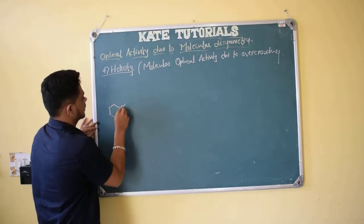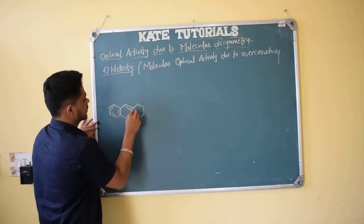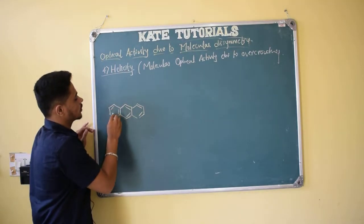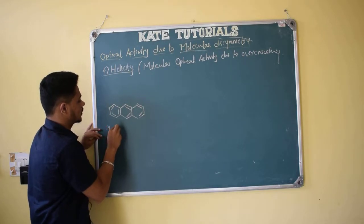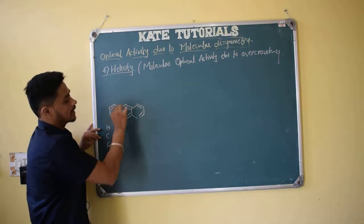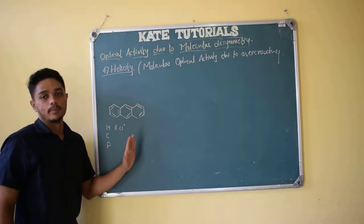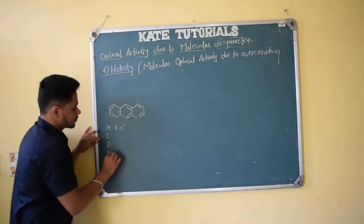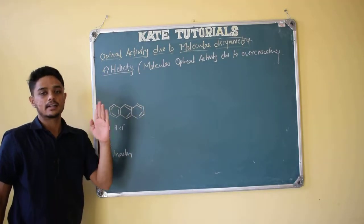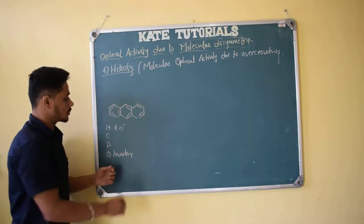Consider anthracene — this is an aromatic compound. Why is it aromatic? Because it has 14 pi electrons with continuous conjugation. All carbons are sp2 hybridized and all are in a single plane, because of which it is aromatic. It is also optically inactive because all atoms are in a single plane, so a plane of symmetry exists.